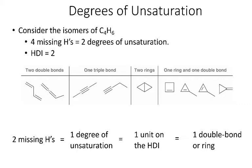Now if we consider C4H6 and we look at all of these different isomers, if we did the 2N plus two, two times four is eight plus two would be 10, so since we're four less than that, four missing hydrogens equals two degrees of unsaturation, or the hydrogen deficiency index would be two. So the different isomers that we could draw for C4H6, I could either have two double bonds or one triple bond, I could have two rings or one ring and one double bond. But in general, two missing hydrogens is equal to one degree of unsaturation, that's the same thing as one unit on the hydrogen deficiency index, and the useful thing is that tells me that for every two missing hydrogens, there's at least one double bond or ring in that compound.